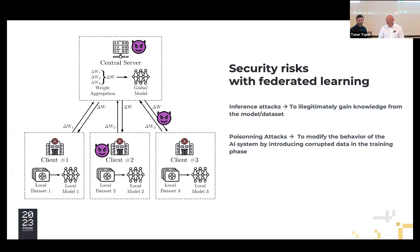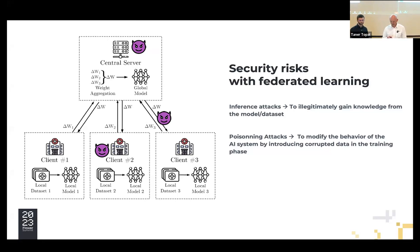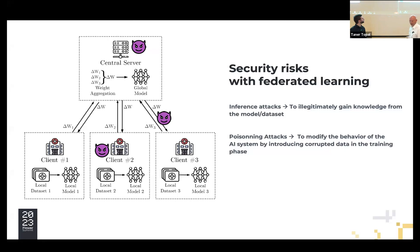With this kind of distributed architecture, of course, we have several security risks, mainly between the central server and the client server. It's possible to have an attack. This attack between the central server and the client server is called an inference attack.